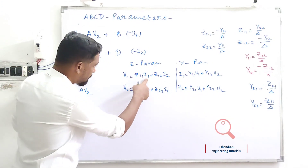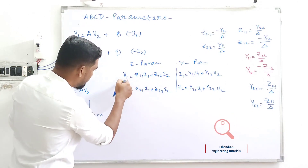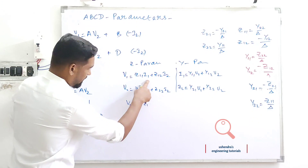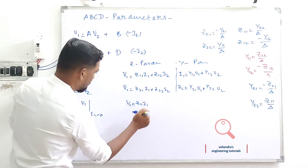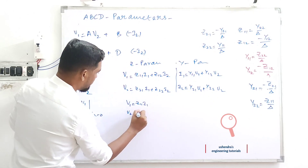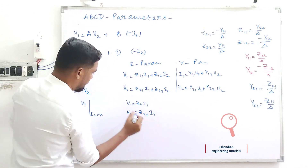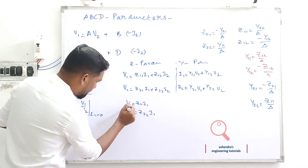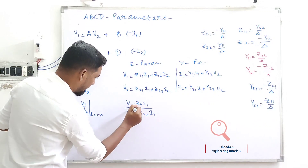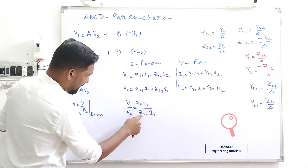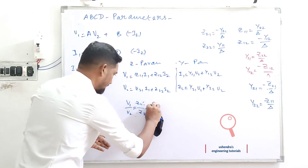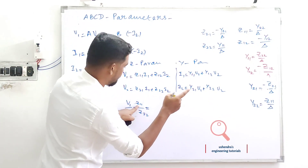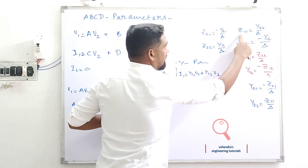Applying the condition I2 = 0 to the Z-parameter equations: from the first equation, V1 = Z11·I1, and from the second equation, V2 = Z21·I1 — wait, with I2 = 0 the second gives V2 = Z21·I1. So the ratio V1/V2 = Z11·I1 divided by Z22·I1, and I1 cancels.